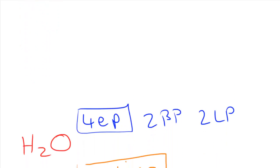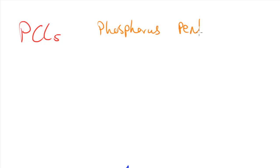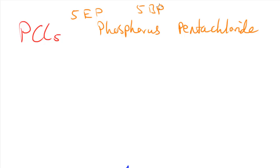Now let's move on to molecules with more than four electron pairs — specifically five electron pairs. I'll focus on the case of five bonding pairs and zero lone pairs, which is one of the trickier ones. This is phosphorus pentachloride, PCl5, with five electron pairs and five bonding pairs and zero lone pairs.